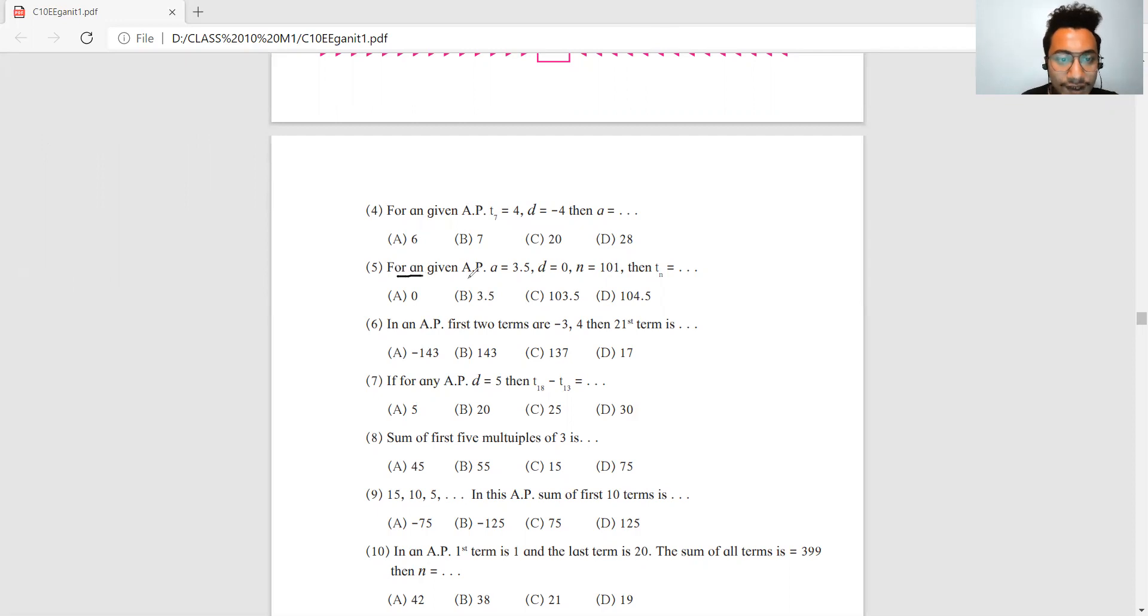Question number 5: For an AP, a equals 3.5, d equals 0, n equals 101. So Tn is 3.5 plus 101 multiplied by 0. Very complicated looking, but the answer is 3.5. Any number multiplied by 0, your answer will be 0 at the end.